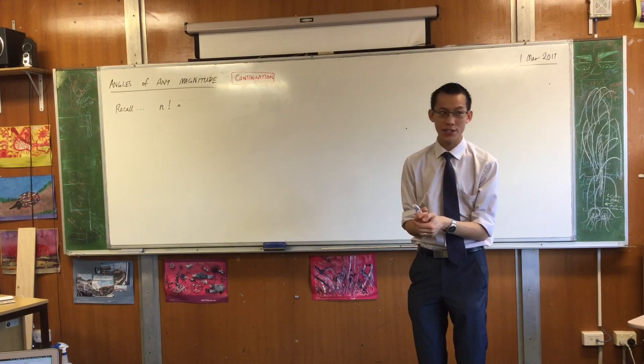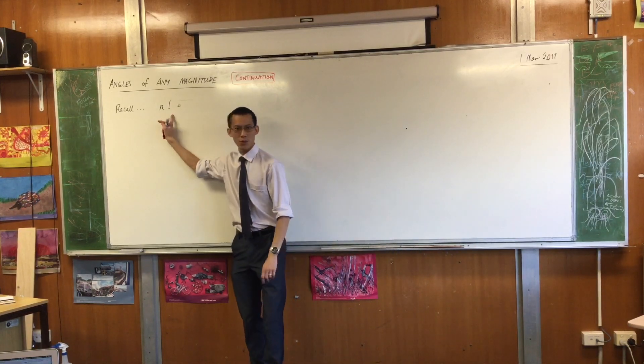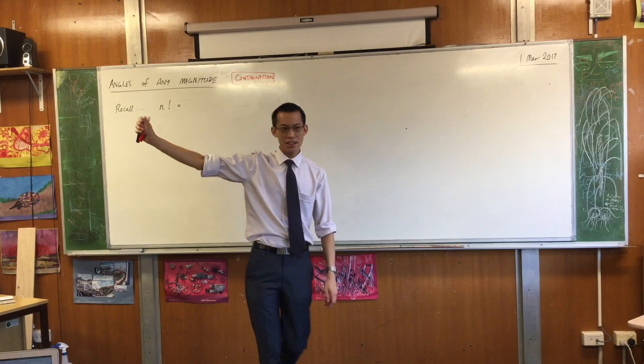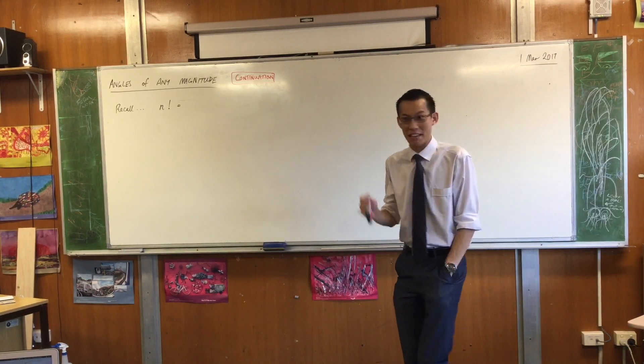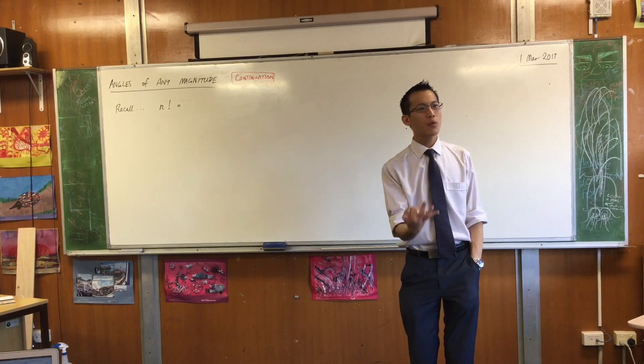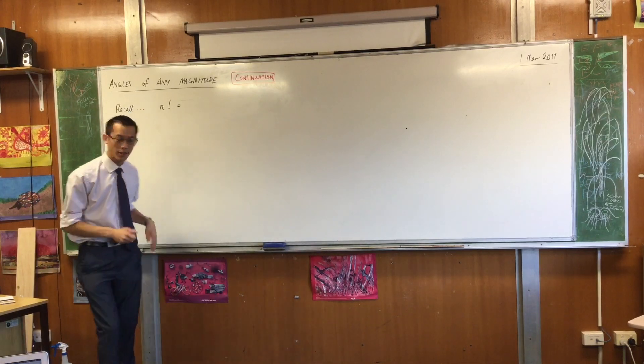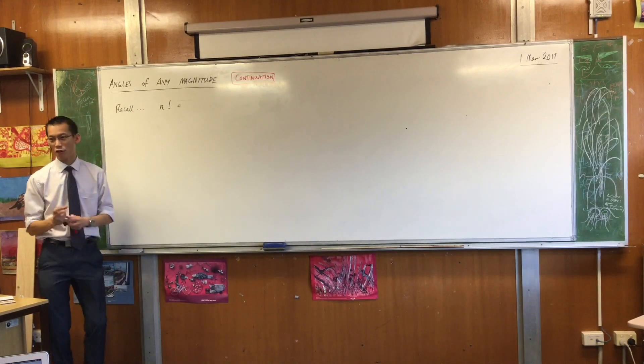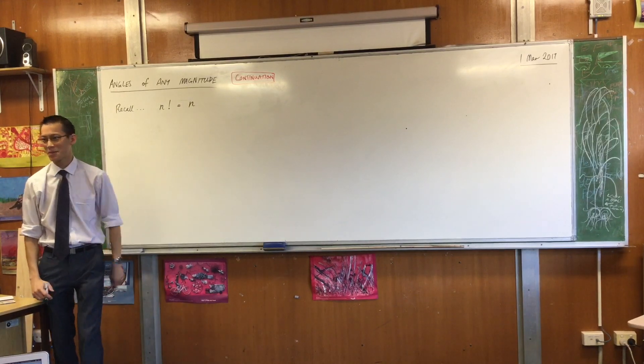So we actually did this very recently when we were doing binomial theorem. I introduced this guy, what is this guy again? This is the factorial function, right, that has an exclamation mark because it grows really fast. And we started with a definition for this. What was our definition algebraically for n factorial? I'll give you a clue, it starts with n. What comes next?